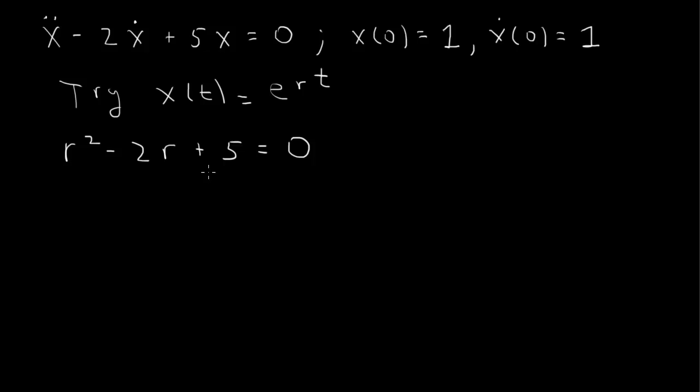To find the roots of this equation, 5 is 5 times 1 so it doesn't easily factor, so we use the quadratic formula. r equals negative b, which is 2, plus or minus the square root of b squared, 4, minus 4ac, minus 4 times 5 which is 20, over 2a, 2.